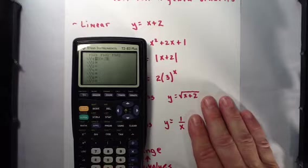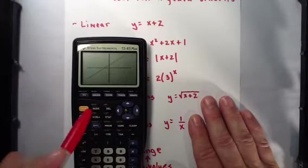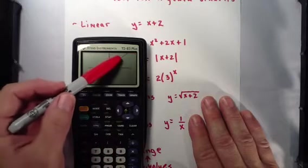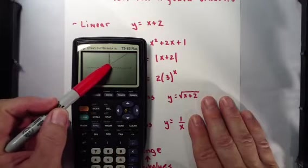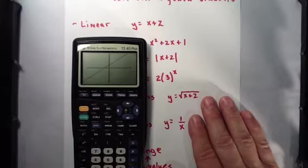Let's put that into our calculator. X plus 2. Hit the graph button. Slope, rise over run. Y-intercept.